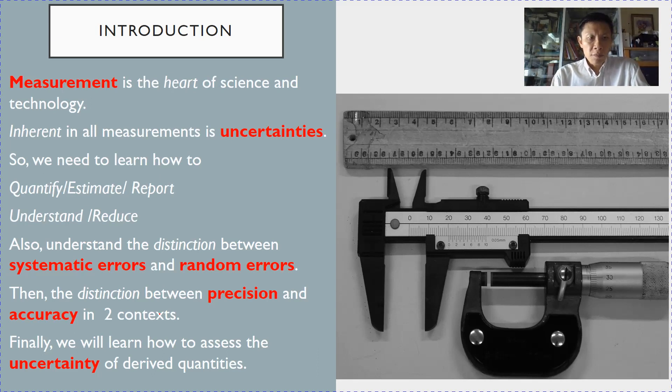In the following sections, you will learn about the distinction between systematic and random errors. And all this will help you to make distinction between precision and accuracy in two contexts: in the context of data recordings, as well as in the context of instruments. And last but not least, we need to solve problems where we calculate the uncertainty of derived quantities.